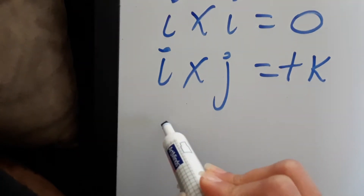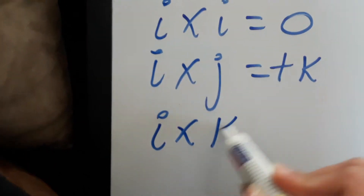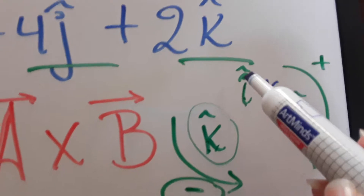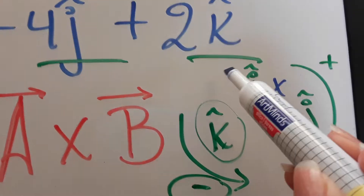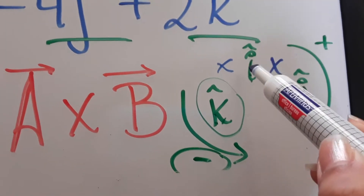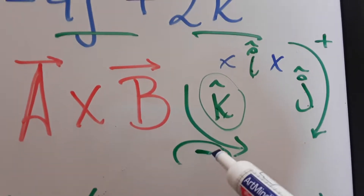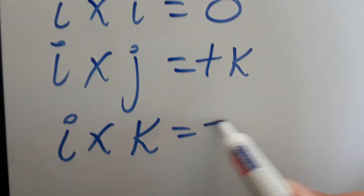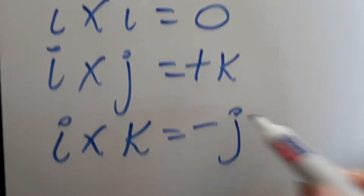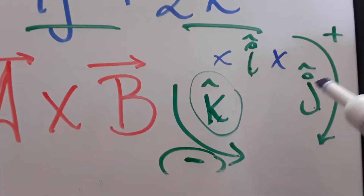And we're going to see i cross k. Is i cross k positive or negative? We're going i cross k — we're going this way, so it's going to be a negative. So we're going to have a negative j.